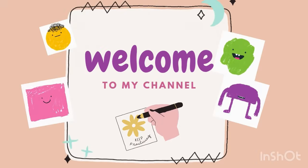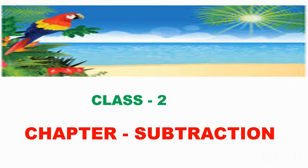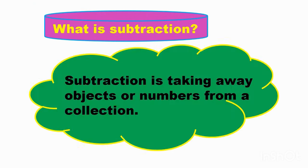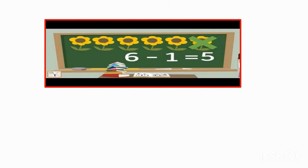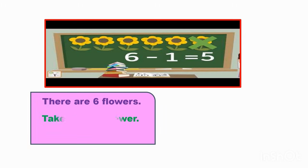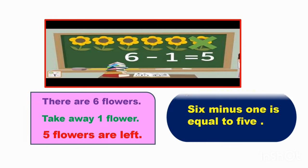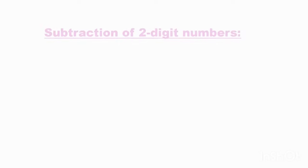Hello kids, welcome to mathematics class. We are going to learn subtraction. What is subtraction? Subtraction is taking away objects or numbers from a collection. Let us see this example: there are six flowers, take away one flower — five flowers are left. It means six minus one is equal to five. This minus sign is the sign of subtraction.